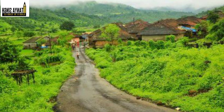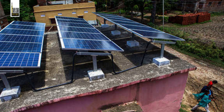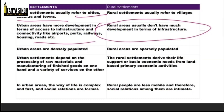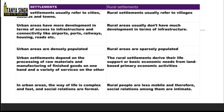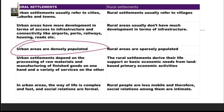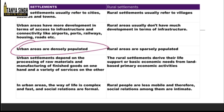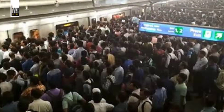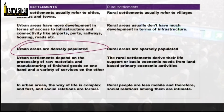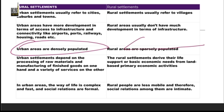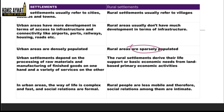Another key difference is population density. Urban areas are very densely populated — if you go to Delhi or Mumbai, there is a lot of crowding. In rural areas like villages, it is very peaceful and there is no crowding. So urban settlements are densely populated, while rural settlements are sparsely populated.